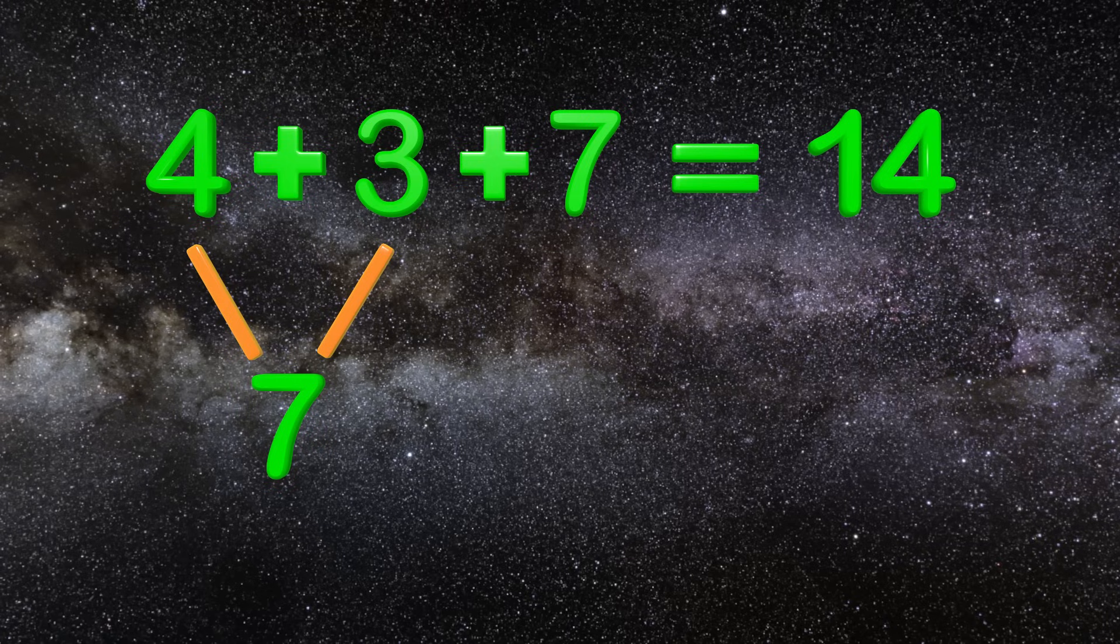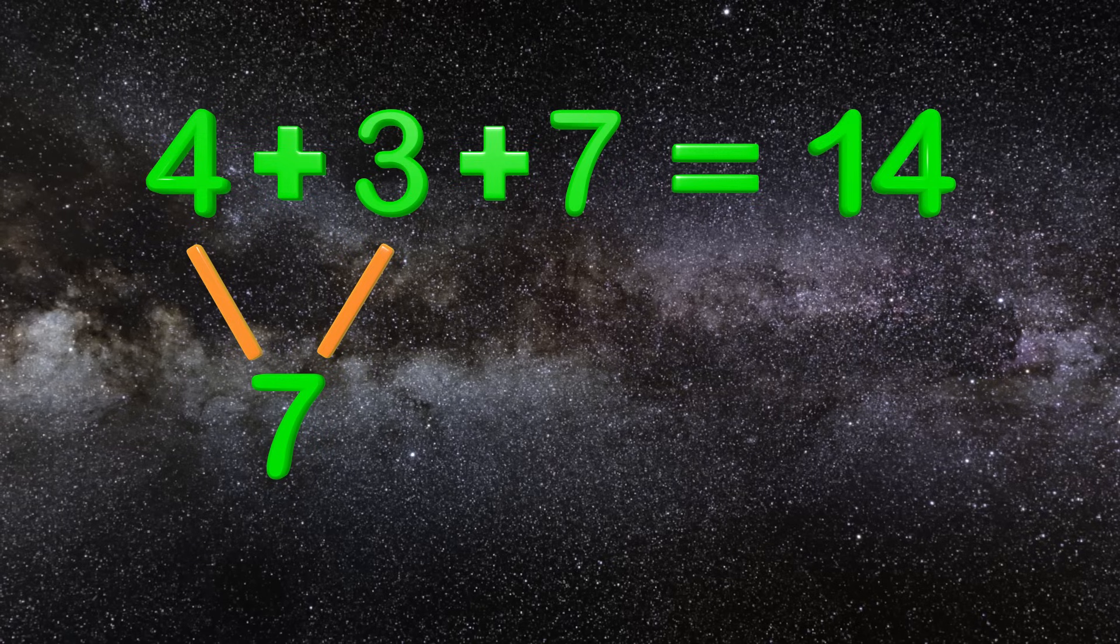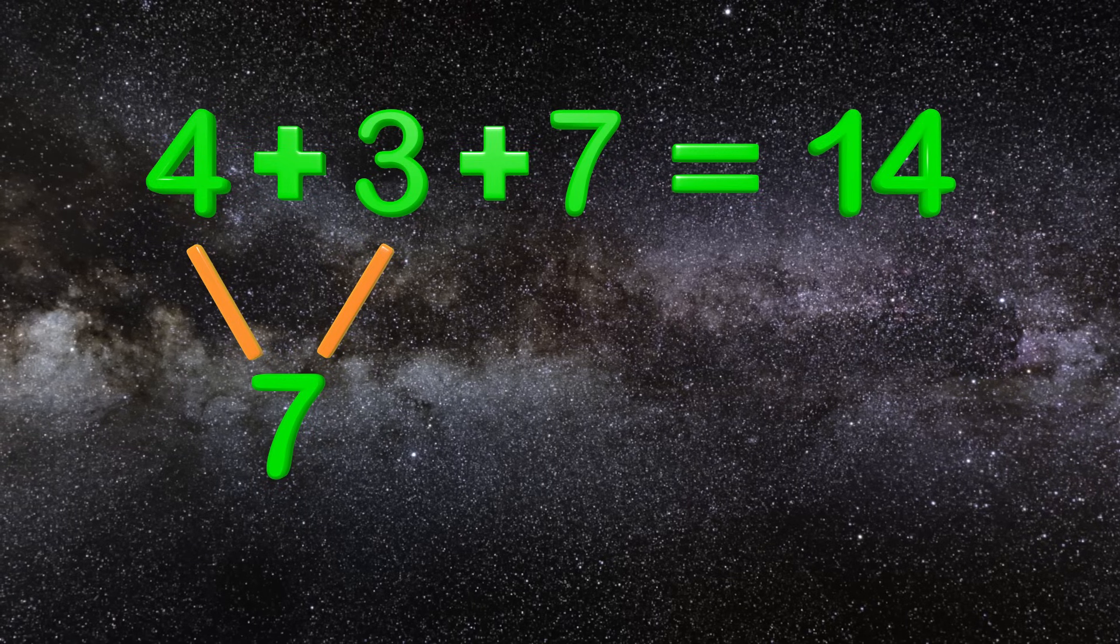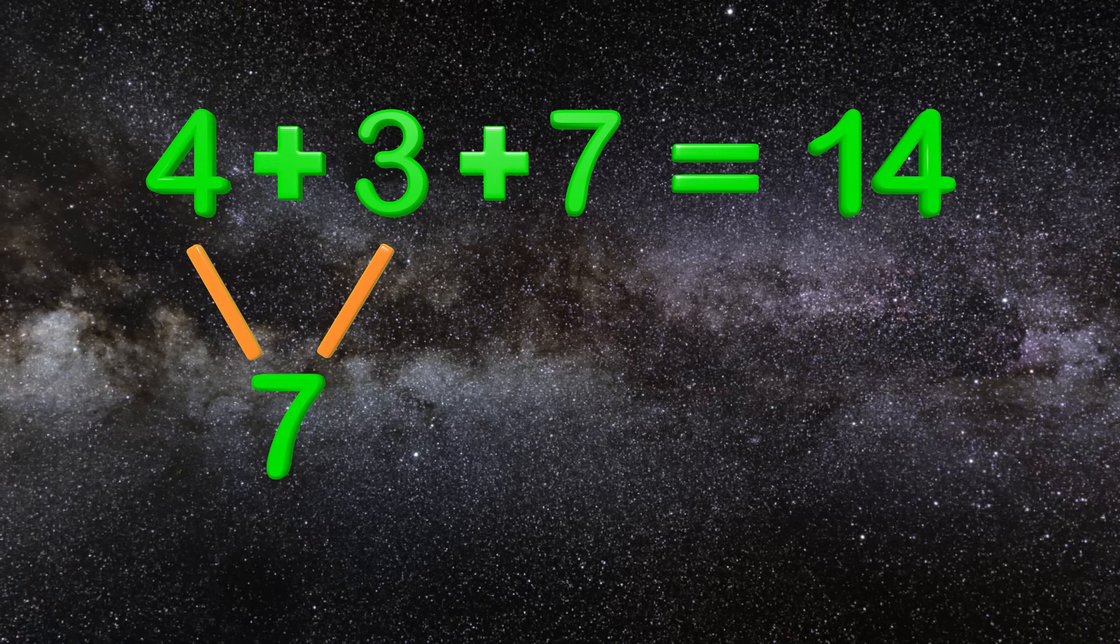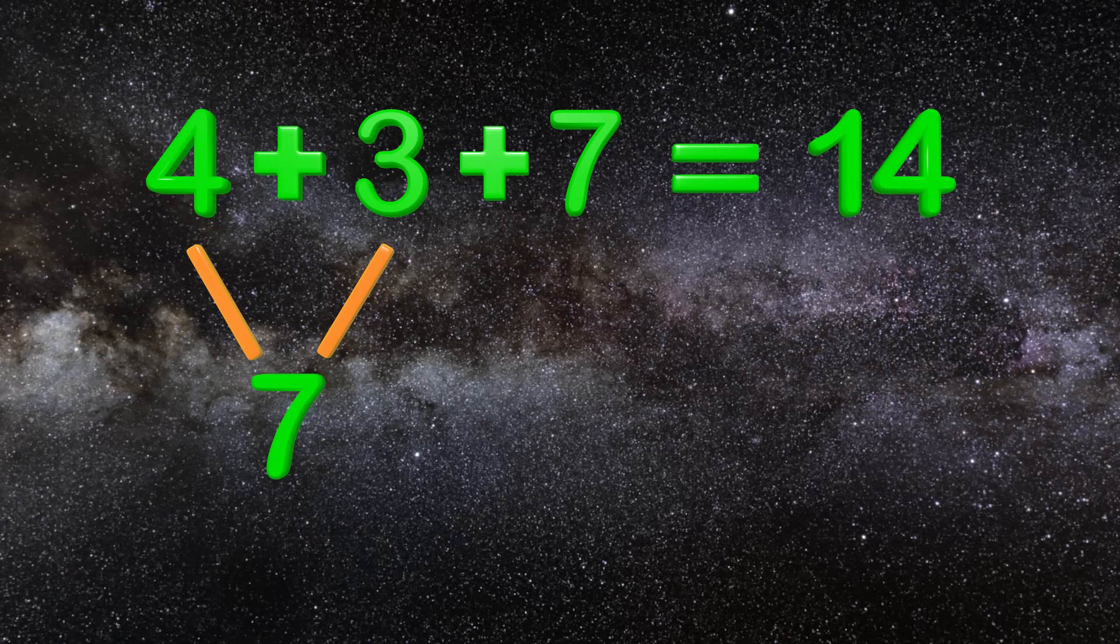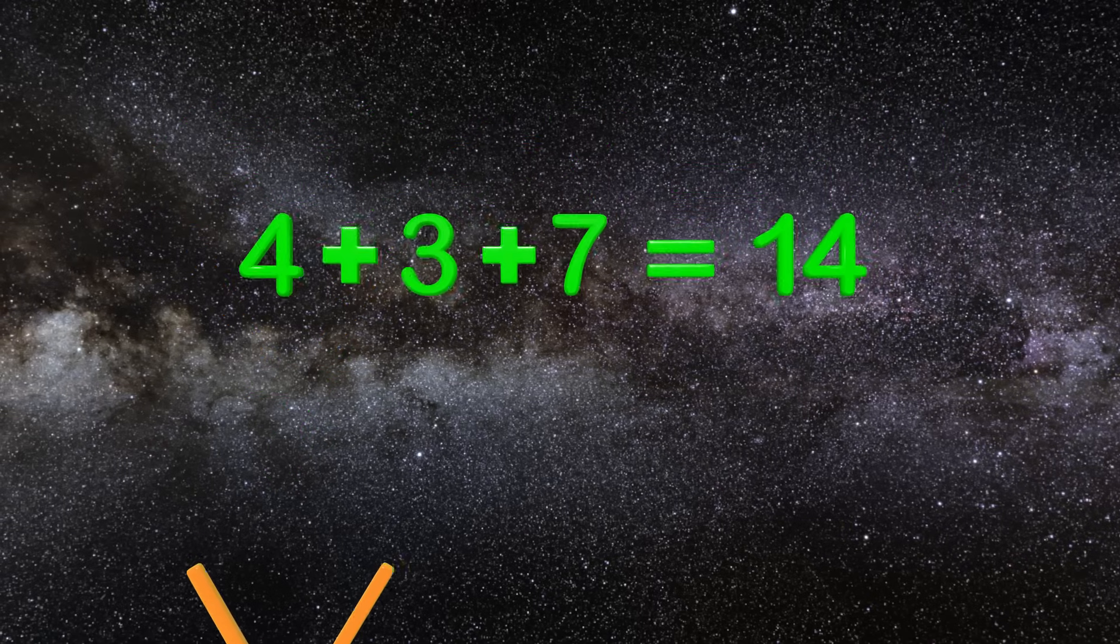Wow! Because I added those first two numbers together it gave me a double which is easier to add when you know your doubles. That was much faster than counting all the numbers one by one. This is what we call the associative property. We are using what we know about numbers to make adding faster.